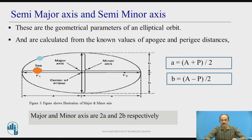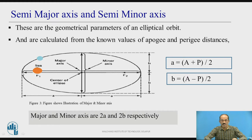Next, we will define semi-major axis and semi-minor axis. These are the geometrical parameters of an elliptical orbit and are calculated from the known values of apogee and perigee. If I know apogee and perigee, I can calculate semi-major axis and semi-minor axis. Again, in this diagram, the planets revolve in an elliptical path and the ellipse forms two focuses, F1 and F2. The sun is at one of the focuses — F1.